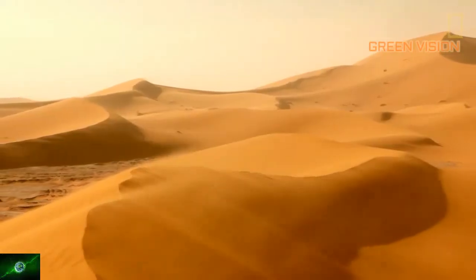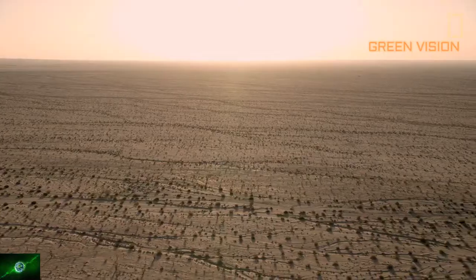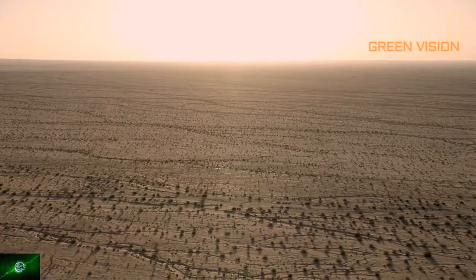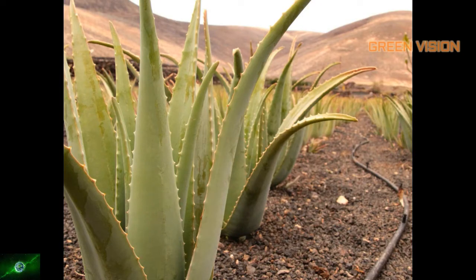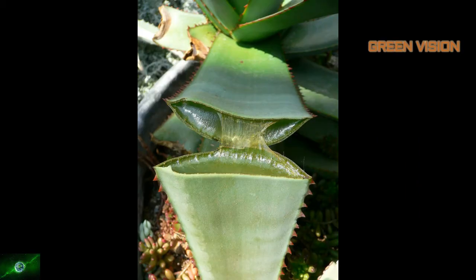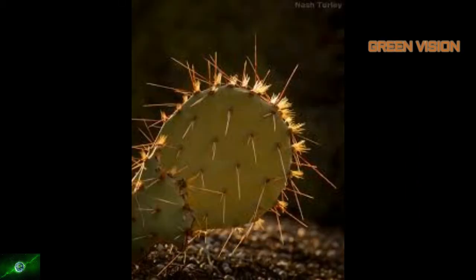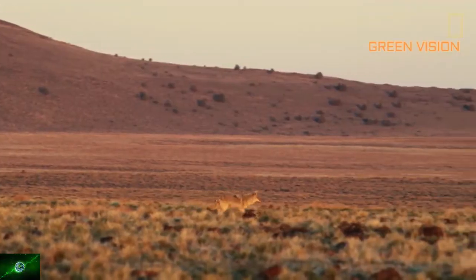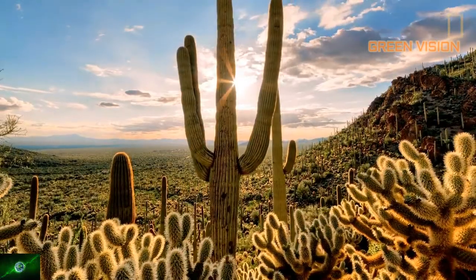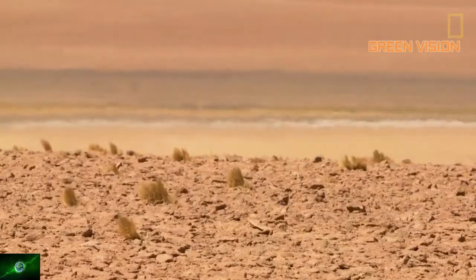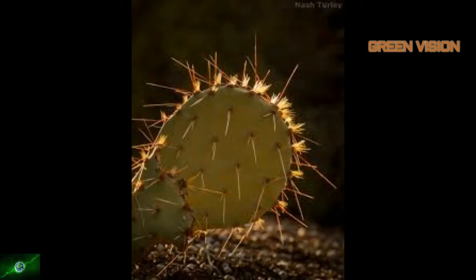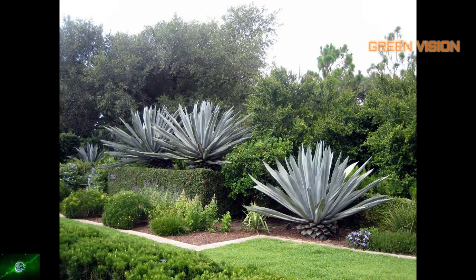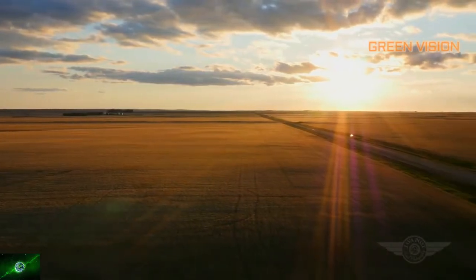What is desert habitat? A habitat without much water is called a desert. Deserts cover at least 20 percentage of the earth. The plants which grow in this habitat have thick leaves and store water and minerals. The types of desert are: hot dry desert, semi-arid desert, coastal desert, and cold desert. The plants growing in the desert include cactus, agave, and aloe vera.